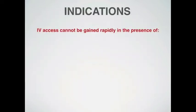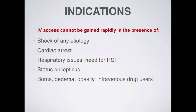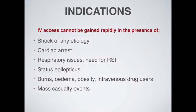So when will we reach for an IO device? We will not reach for it immediately in every patient, nor will it be our go-to modality after a single failed peripheral cannulation attempt. We should consider IO access in every patient in whom IV access cannot be gained rapidly in the presence of shock, cardiac arrest, respiratory distress with the need to secure the airway following an RSI procedure, status epilepticus, or other factors such as burns or mass casualty events — where it is certainly easier and faster to place a large number of IO needles than, for example, central veins. This is also why IO access has always been very popular in the military.